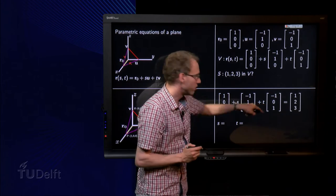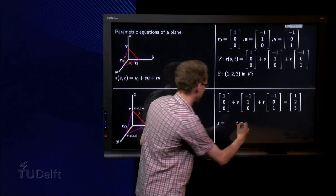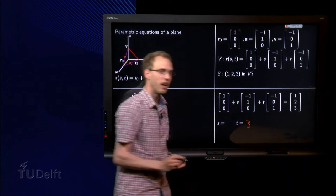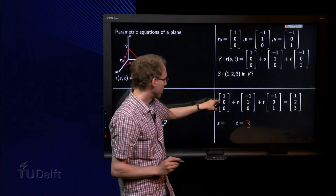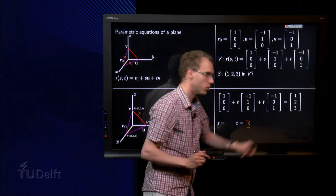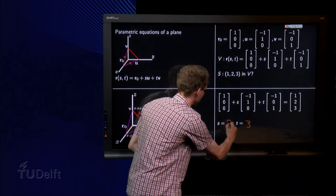If we look at the lowest equation, we see we should take t equals 3. And if we take a look at the middle equation, we get 0 plus s plus 0 equals 2, so s has to be equal to 2.